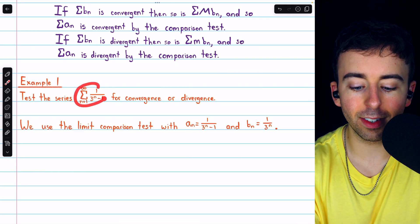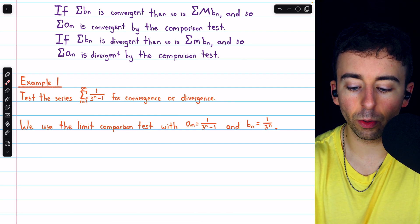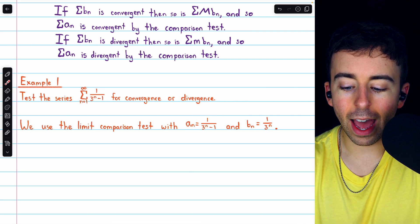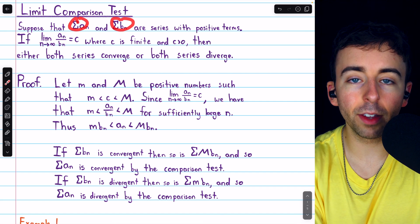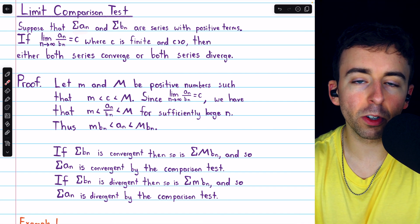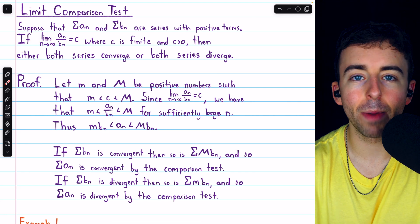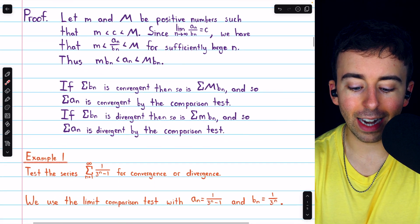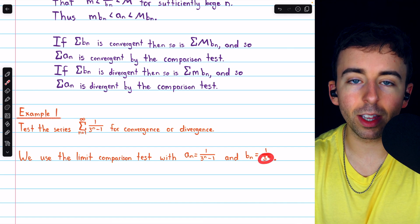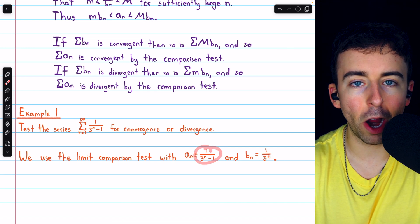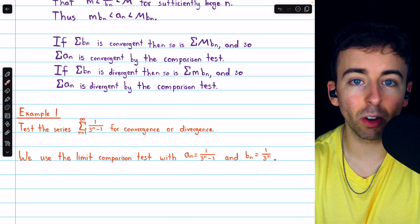Let's use it for those original series. We want to test the series of terms 1 over 3 to the n minus 1 for convergence or divergence. We'll use the limit comparison test with a_n equal to 1 over 3 to the n minus 1, and compare it to b_n equal to 1 over 3 to the n. We know that 3 to the n is the dominant player in the expression, which is how we know to get rid of the minus 1. Plus, 1 over 3 to the n is a geometric series, so we know it is convergent.